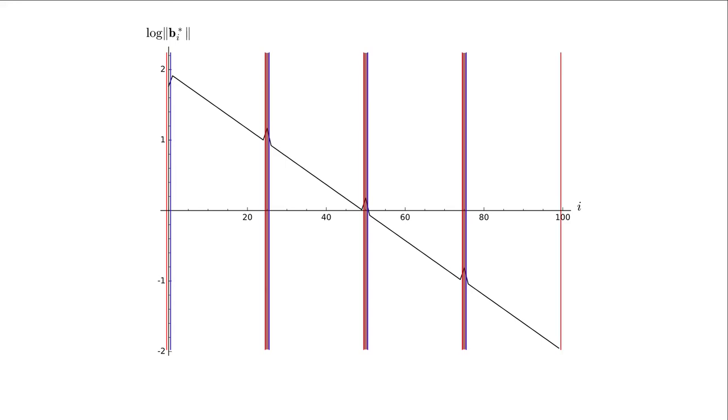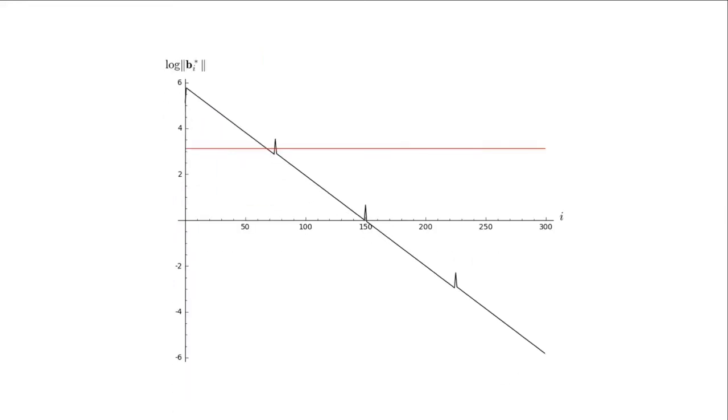Let's have a look what this looks like in action. So here I'm simulating an example of a run of slide reduction on a lattice with dimension 300 and block size 75. So this means we have four primal blocks and three dual blocks. And as you can see, the point on the left that represents the length of the first vector in the basis is creeping towards the red line. It's creeping slowly, but it's getting there. And the red line actually represents the expected result for the length of this first vector.